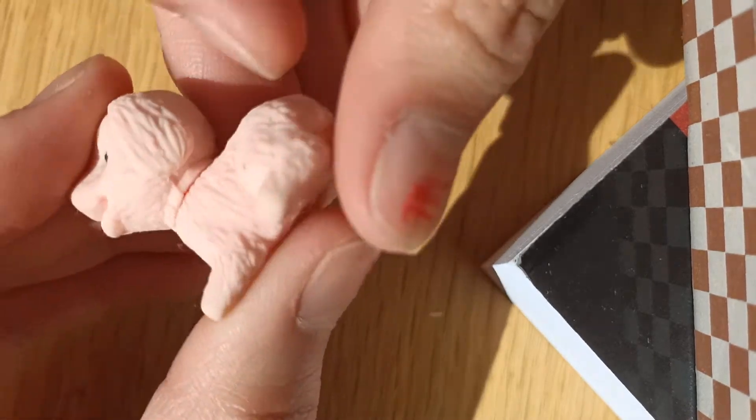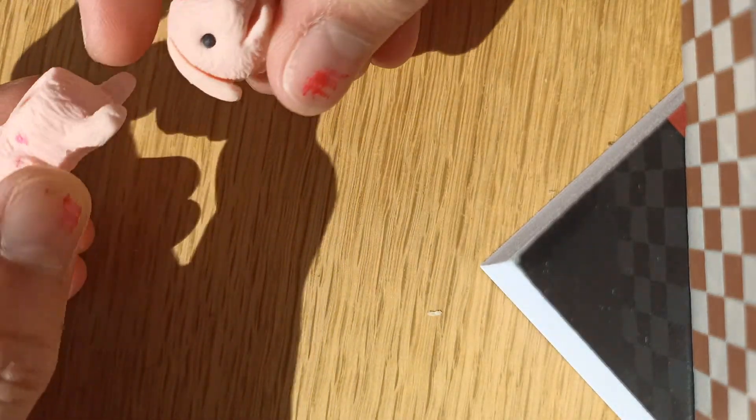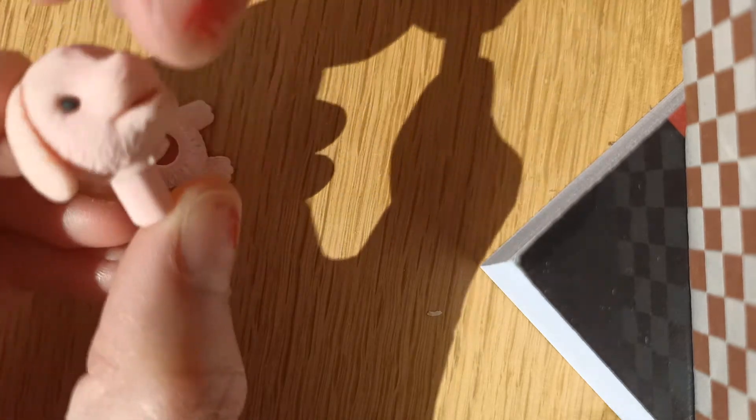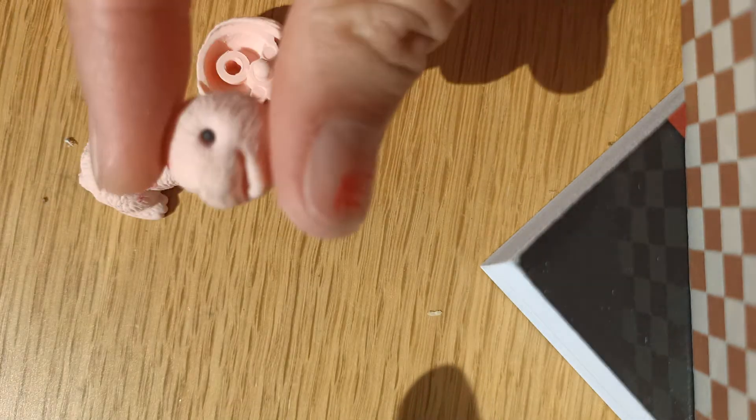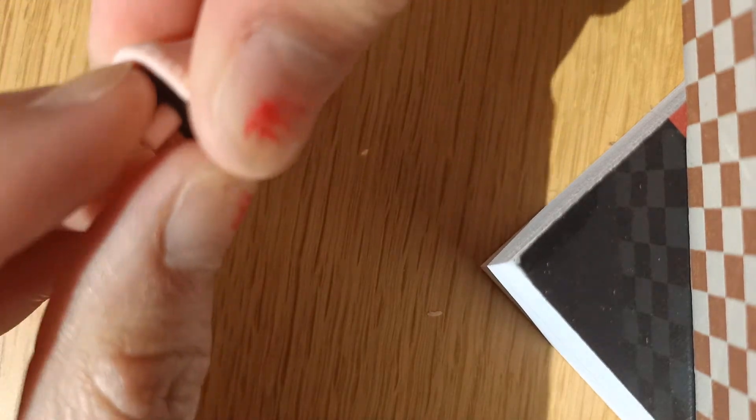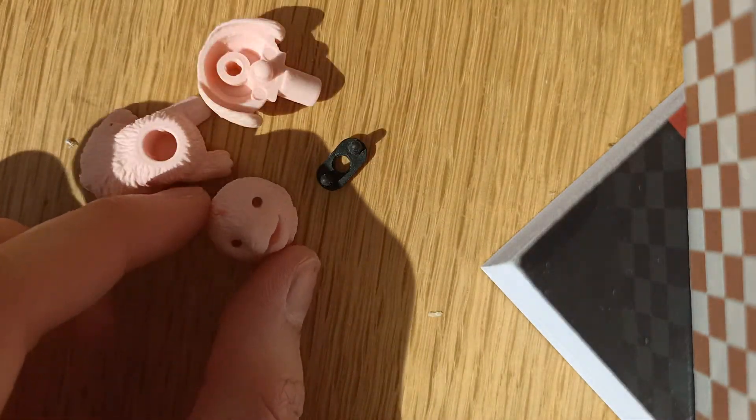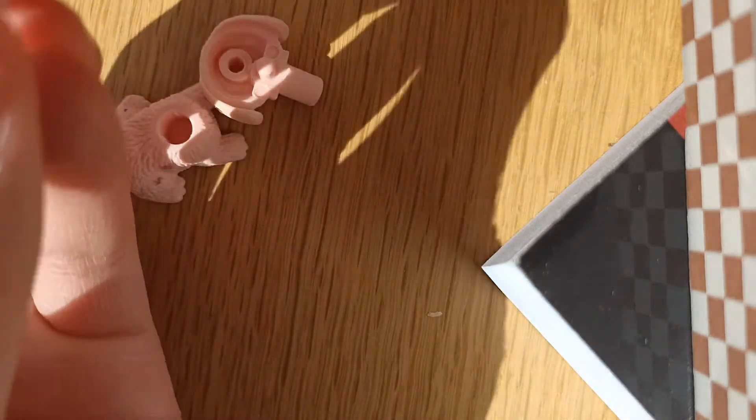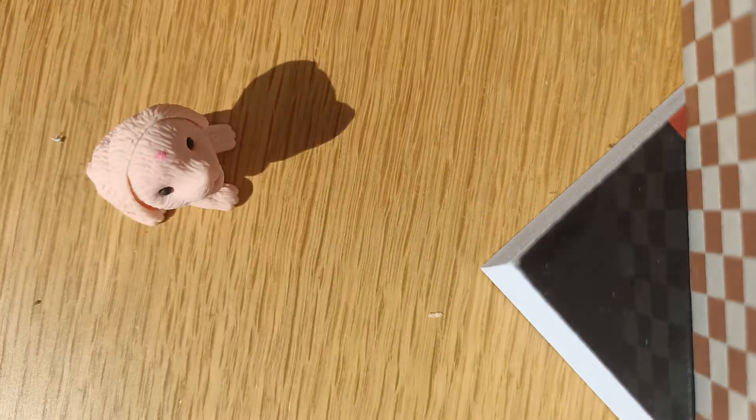And then also have this dog, which comes apart in a slightly horrifying way. And you can also, once you've decapitated it, you can peel off its face. And once you've done that, you can take out its eyes right here. There we go, back together again.